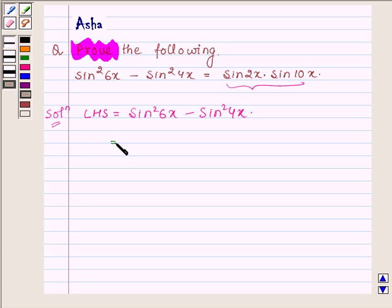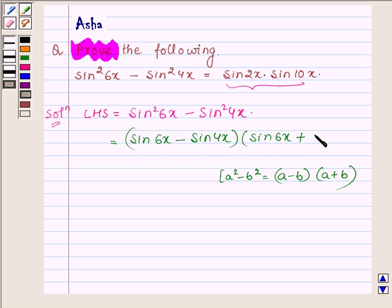Now this is in the form of a² - b², whose formula is (a - b)(a + b). Thus this can further be written as (sin6x - sin4x)(sin6x + sin4x).